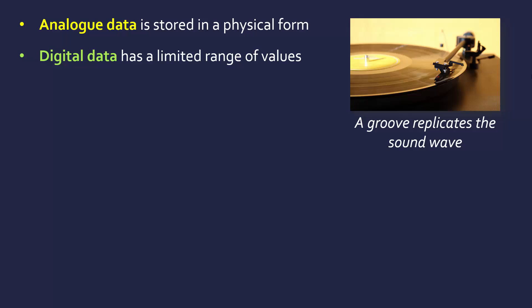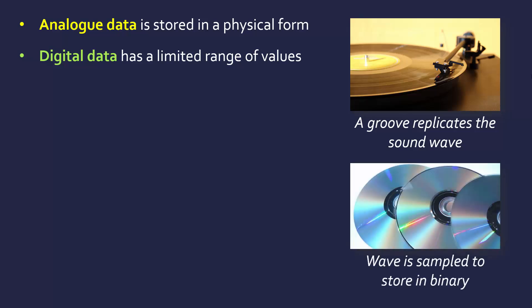This contrasts with digital data which has this limited range of values which can be stored on a computer. For instance, a CD really replaced a vinyl record but it's digital. The way it works is this analog wave is being sampled and these samples are being stored in binary and encoded on the disk.